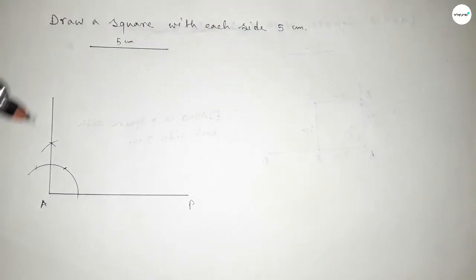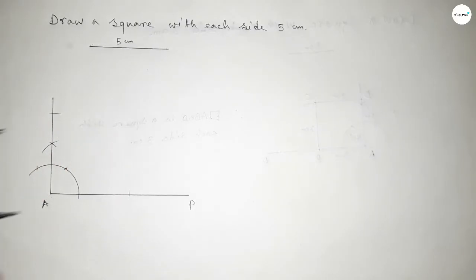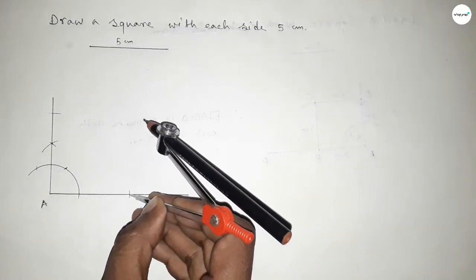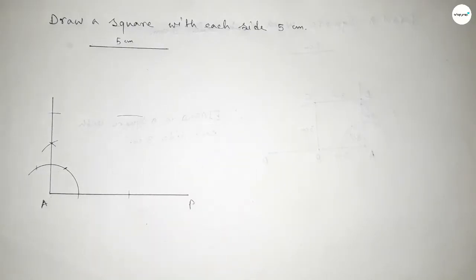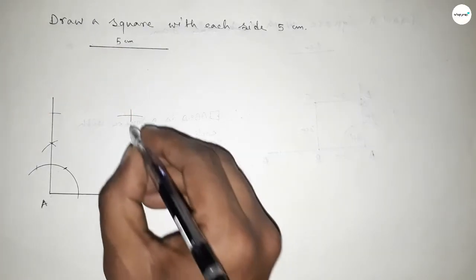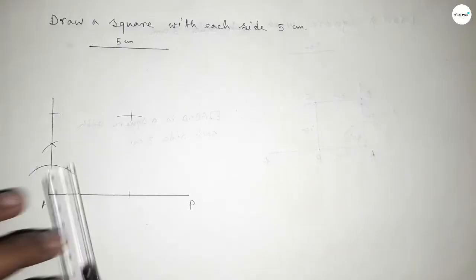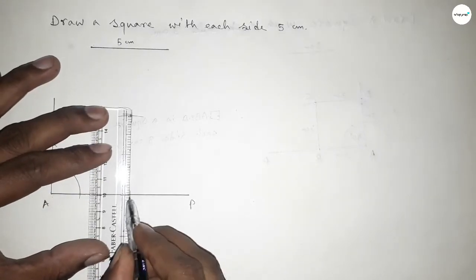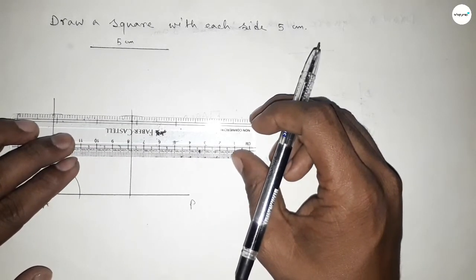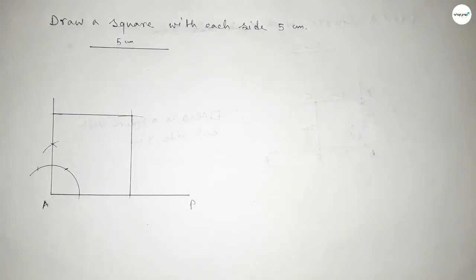Now taking the length 5 centimeters using the compass, putting the compass here and cutting here with the same length. Then putting the compass here and cutting here so both curves intersect at a point. Now joining this side, then joining this side to get a square with each side 5 centimeters.